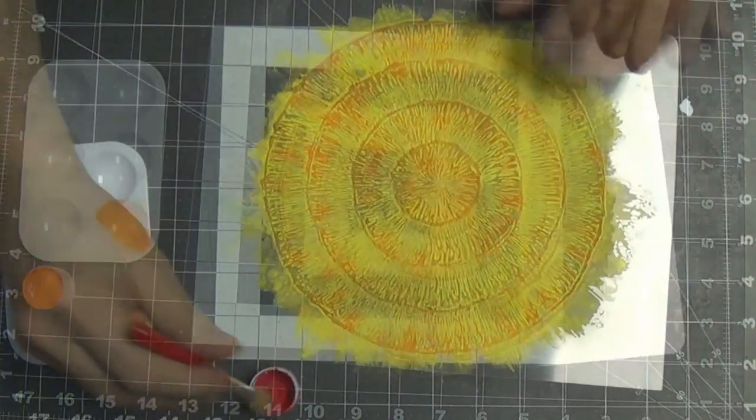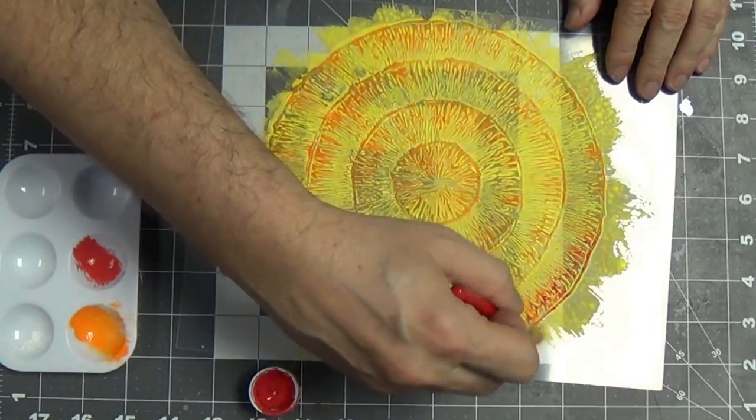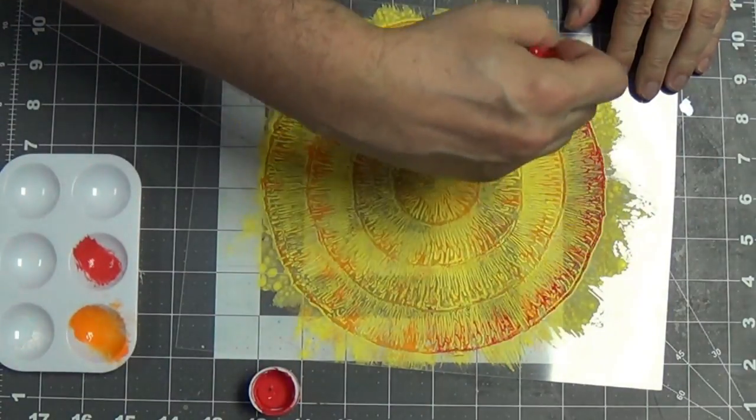Now I'm going to use red and just pull that in like I did the orange. Looking cool, this couldn't be easier.